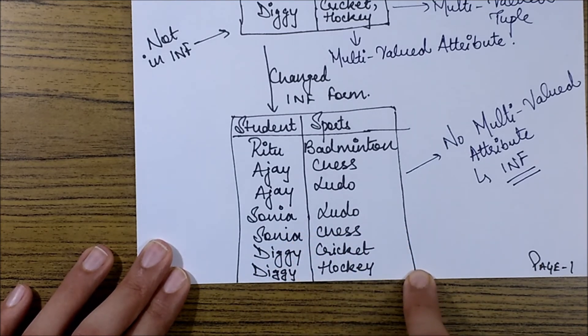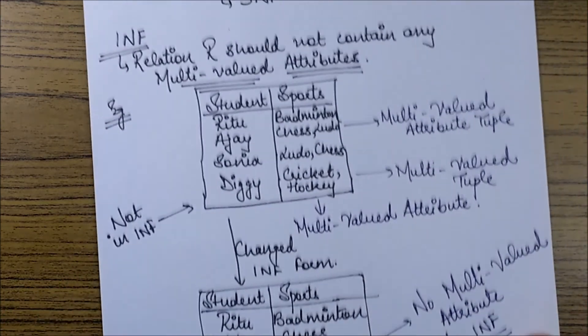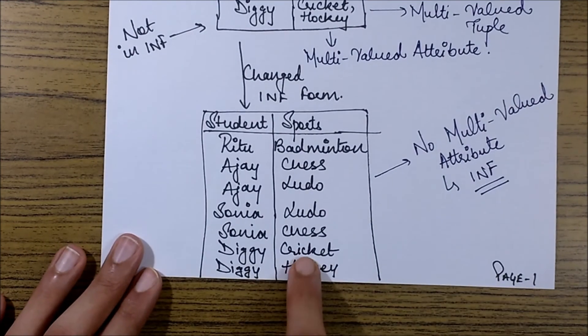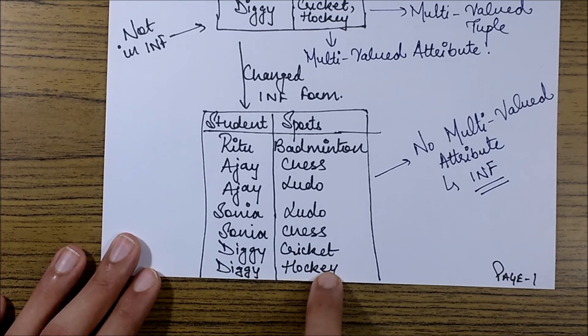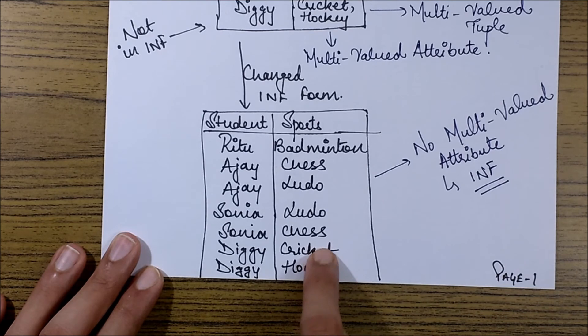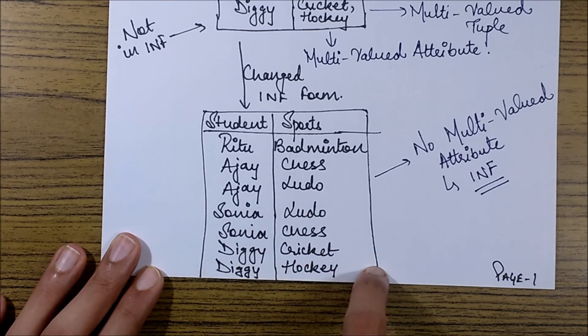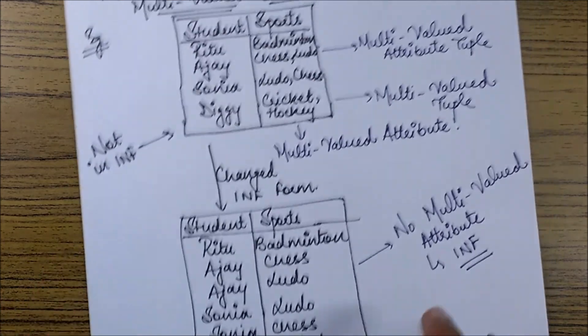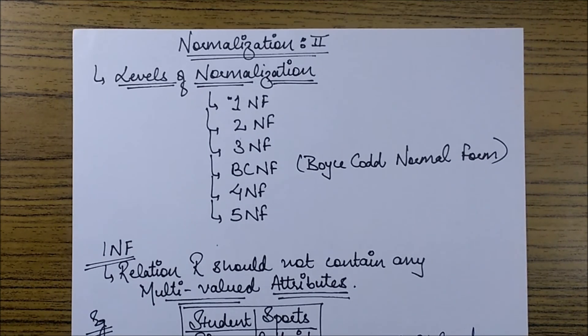So this is how we convert a table into first normal form. Now finally, this new table does not contain any multi-valued attribute. There are only single values or atomic values in both the attributes over here. Hence, this is in one normal form. So this was the procedure to convert a table into first normal form.